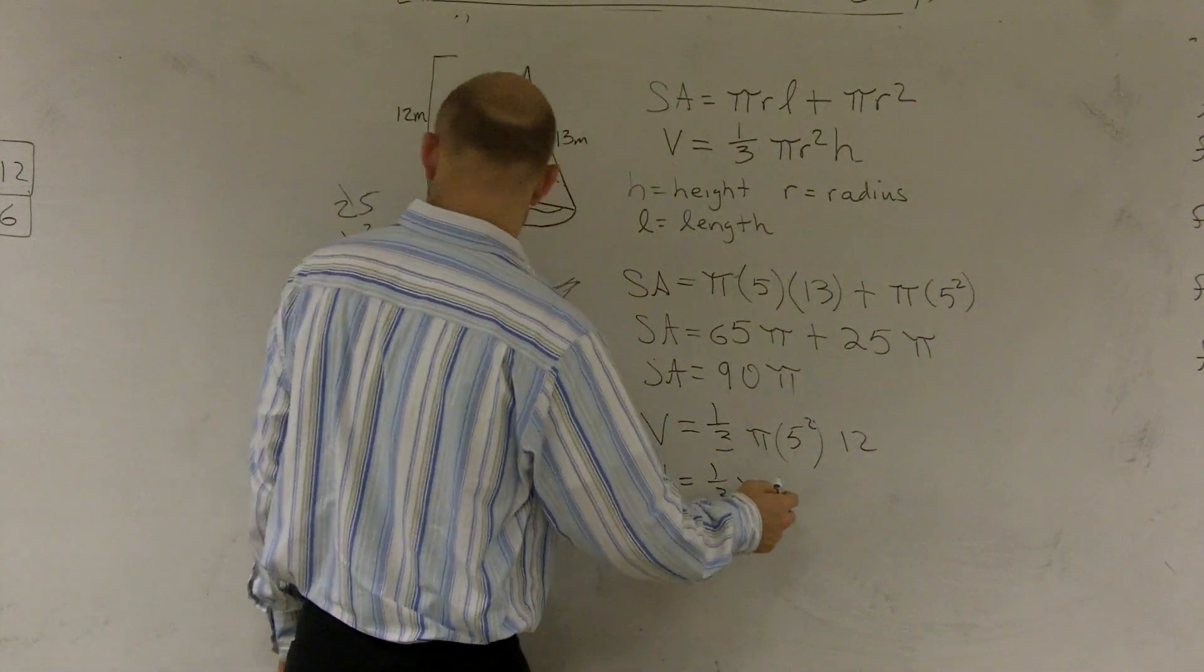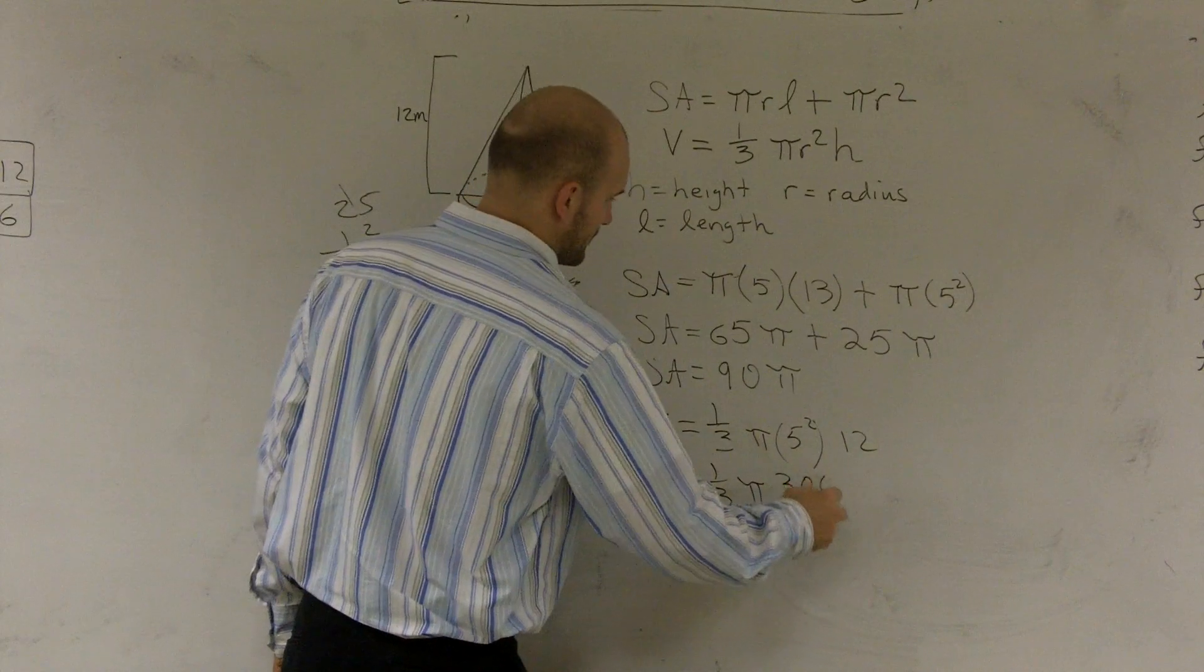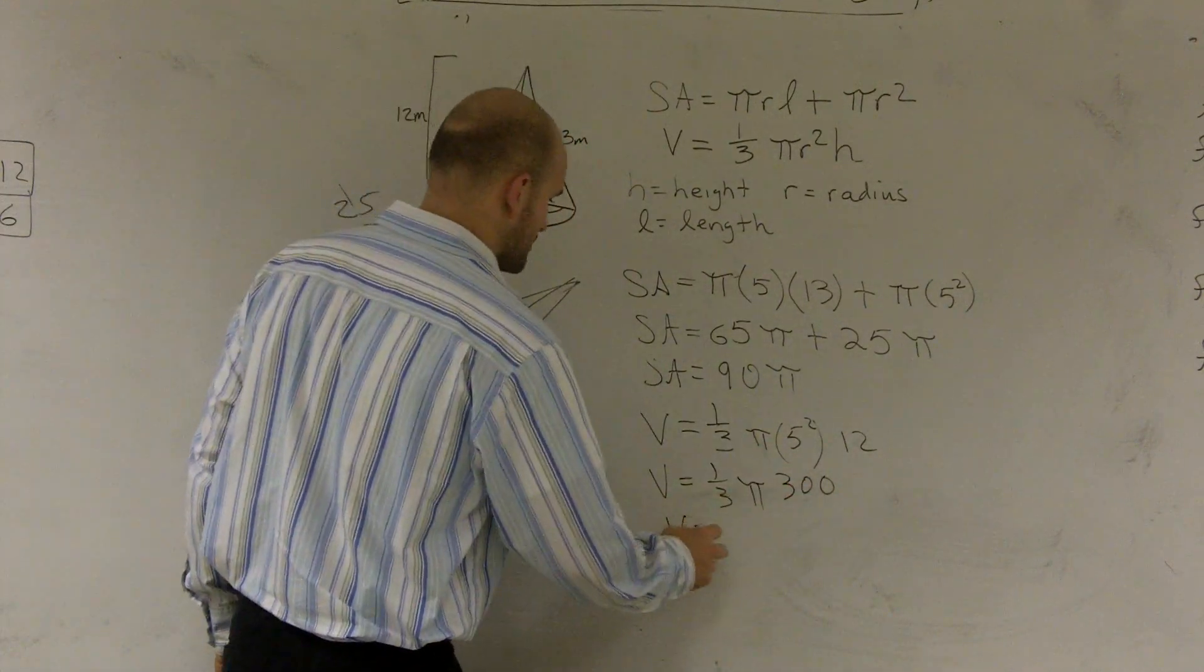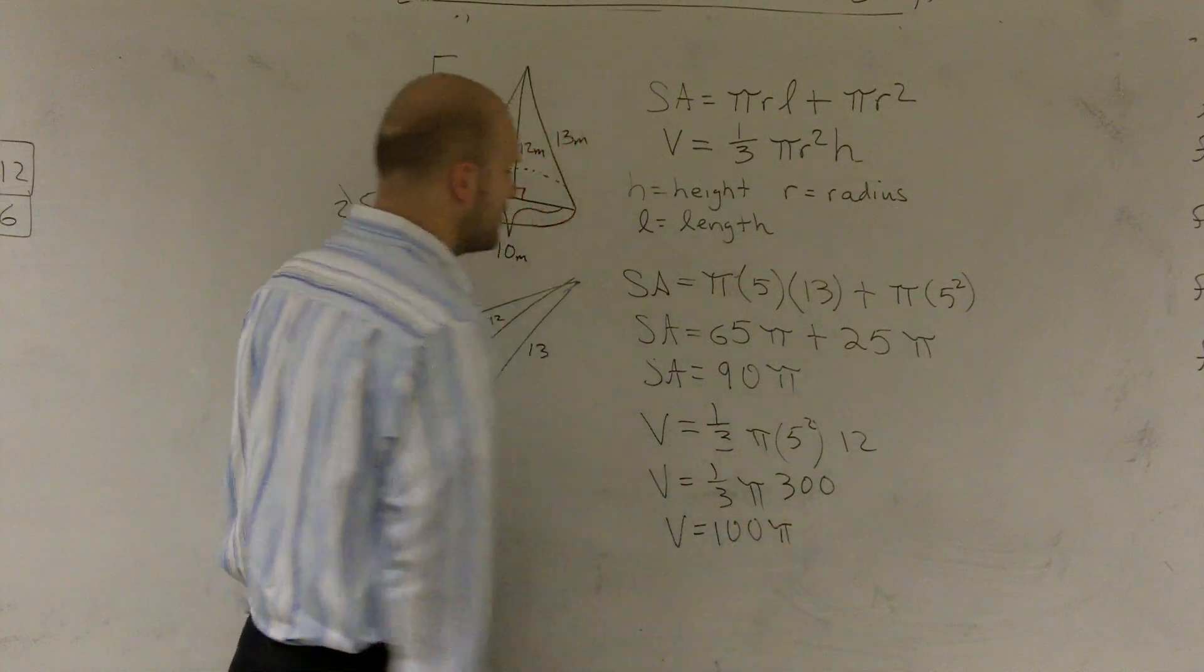1/3 times 300 is 100, so your volume equals 100π.